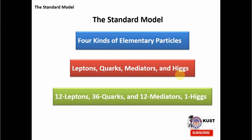We also have another particle called the Higgs. It was recently discovered and is responsible for providing masses through the Higgs mechanism to all other elementary particles. So in total, there are 62 elementary particles in the Standard Model of particle physics.